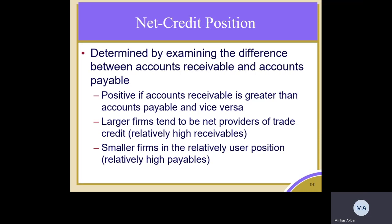Now let's modify this example a little bit. If the same firm has receivables of $150,000, and its payables are still $4,000, but the average payment period is now 40 days instead of 25 days, then what would be its net payable? It would be 40 multiplied by 4,000, equaling $160,000. Now its payables of $160,000 are higher than its receivables of $150,000, which indicates that the net credit position of this firm is negative.